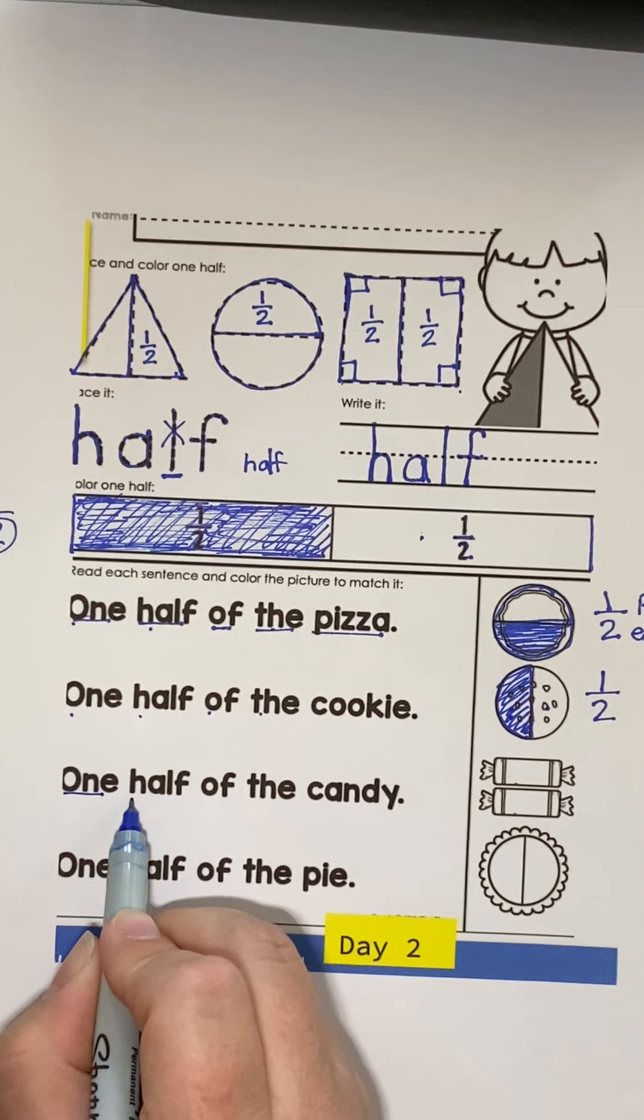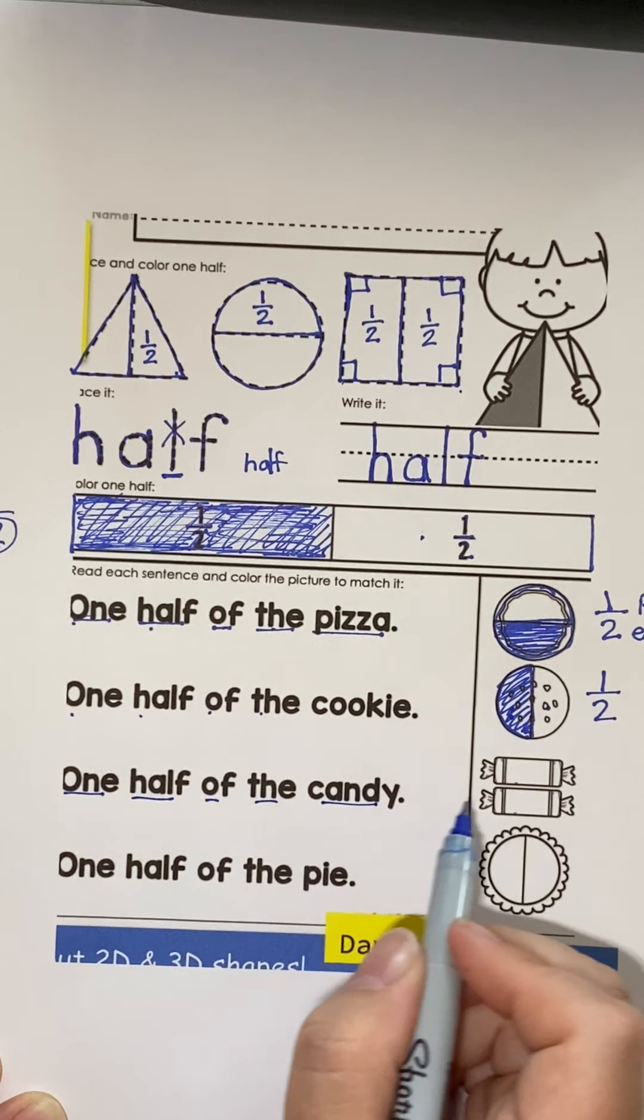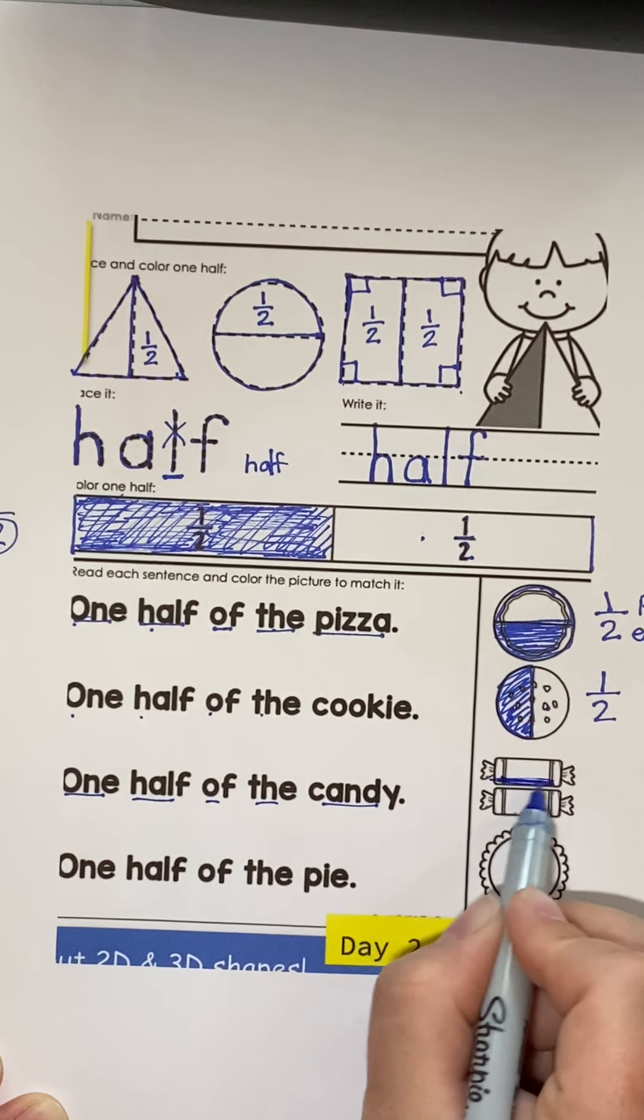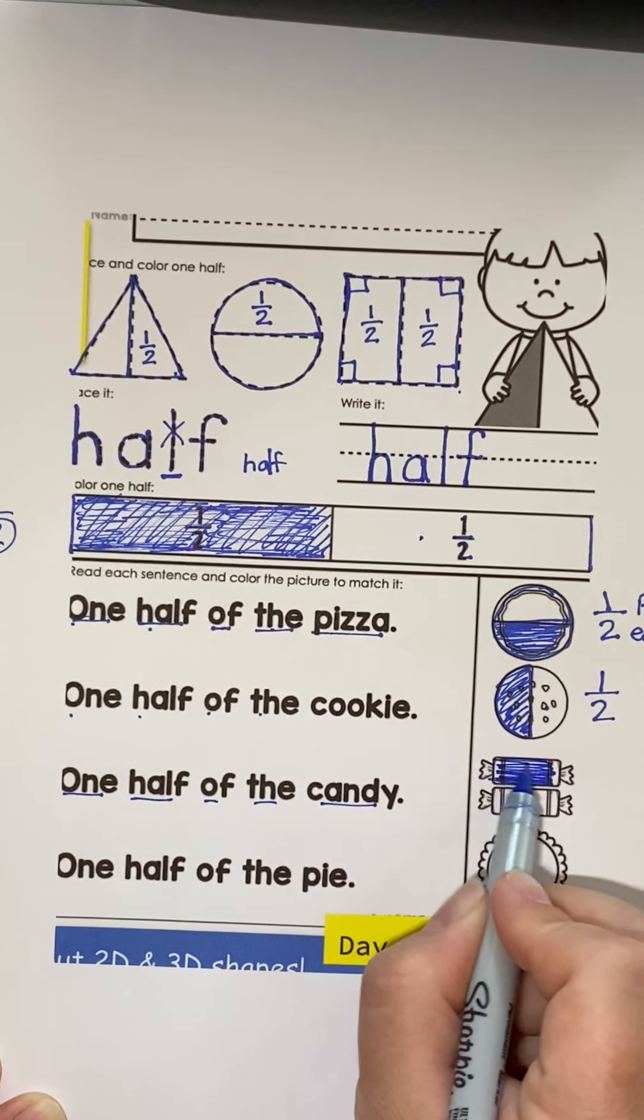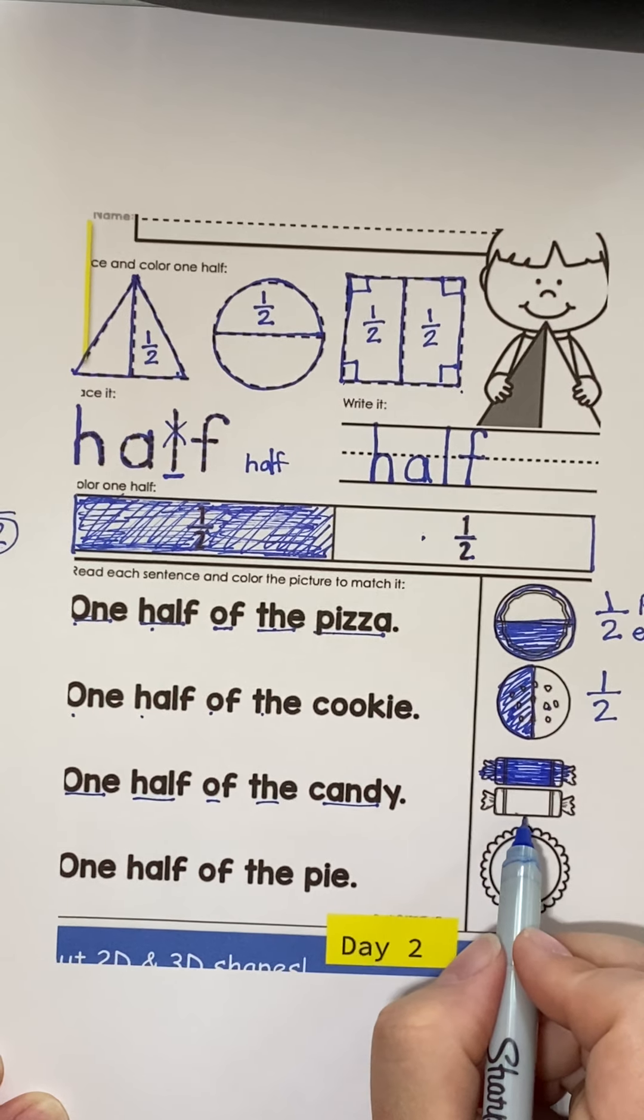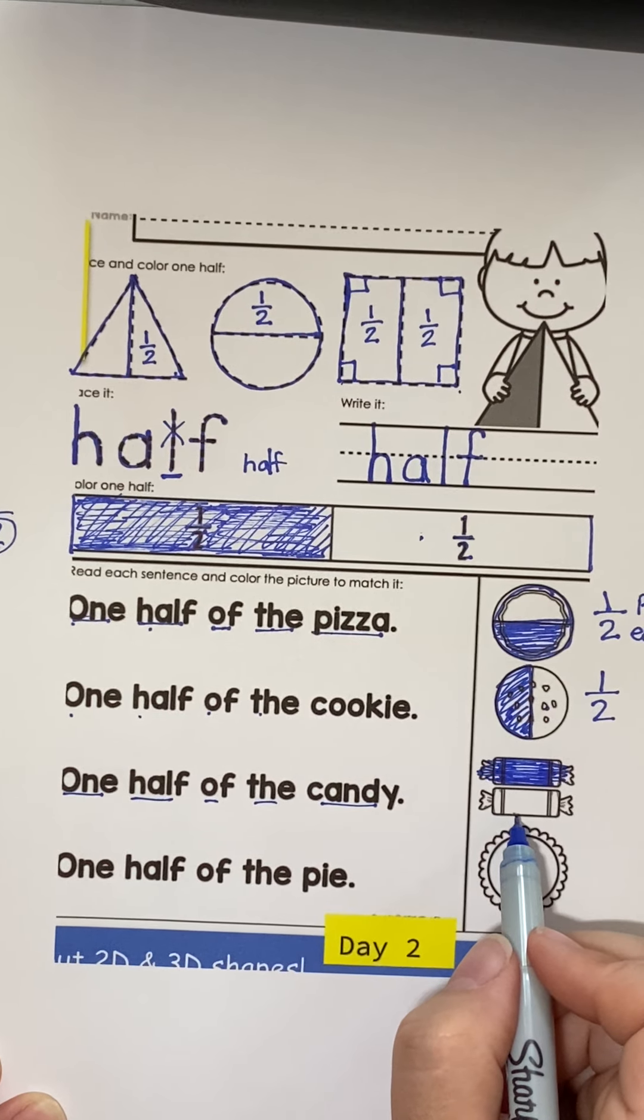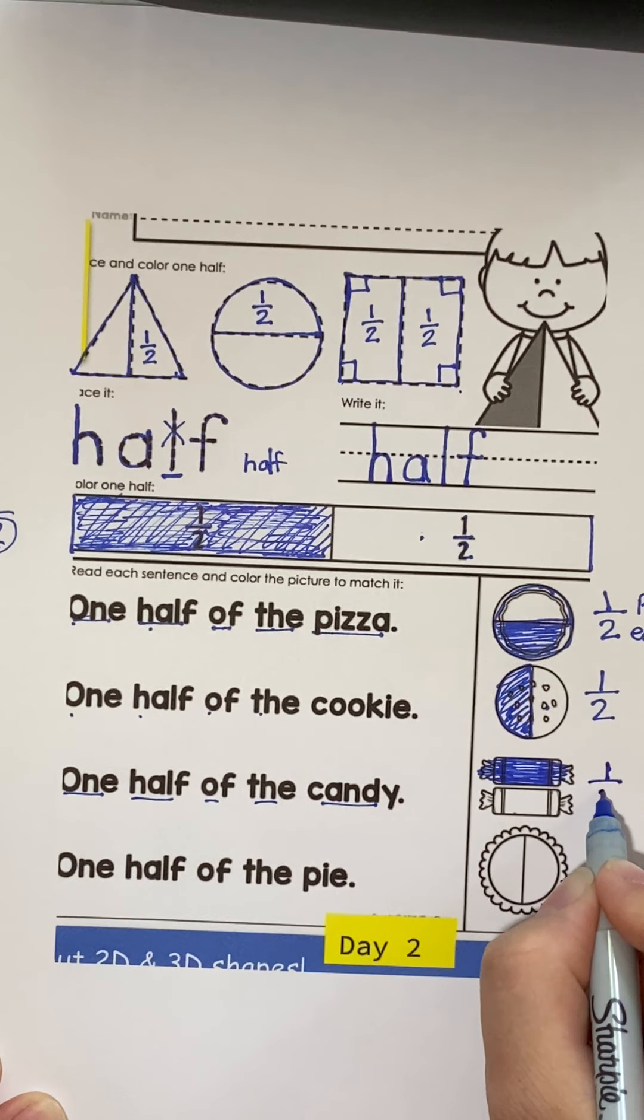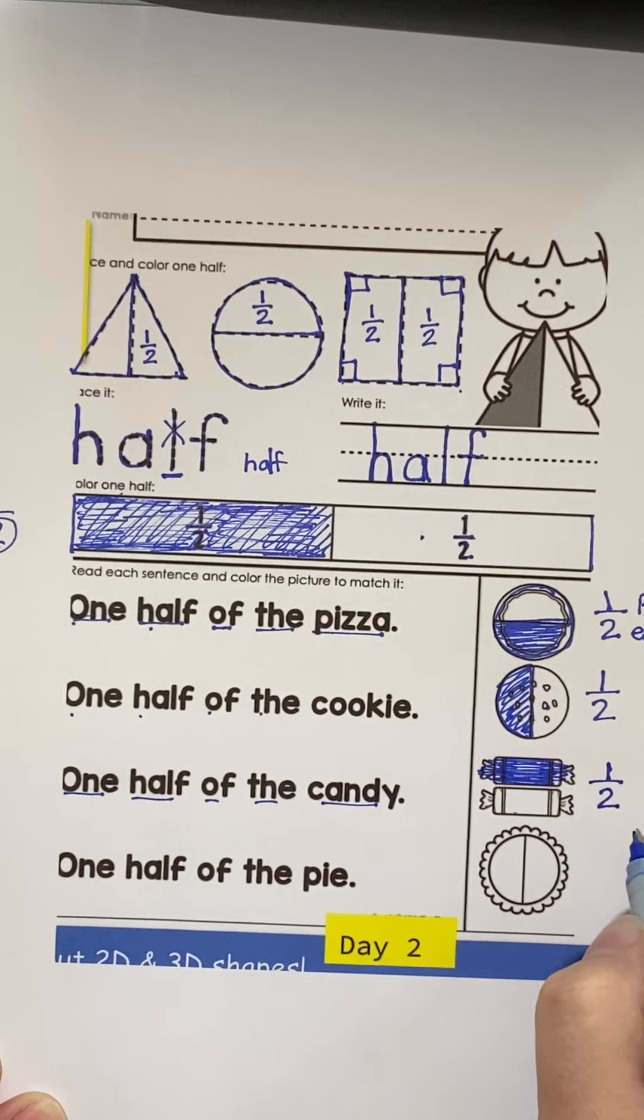One half of the candy. So, if I have two pieces of candy, and I were going to divide them in half, that means I'm going to give my friend one candy, and I will keep one candy. So, one candy for my friend out of two whole candies.